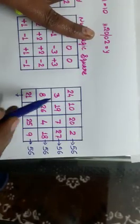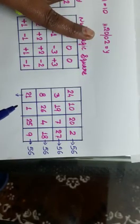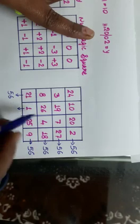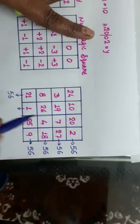See, 21 plus 24, it is 45 plus 8 plus 3, 11. It is 56. Yes, 19 plus 1, 20. 20 plus 26, it is 46 plus 10, 56.